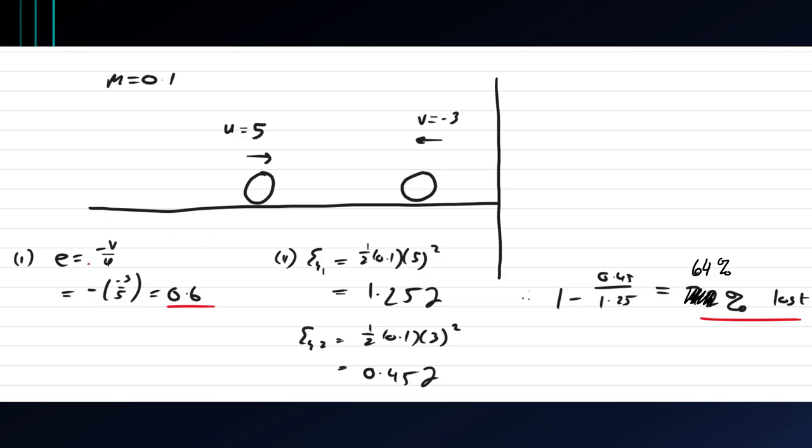The coefficient of restitution is minus the final speed. So final speed is minus 3, if we're taking it to the right it's positive, divided by the initial speed which is 5, which gets us a coefficient of restitution of 0.6.